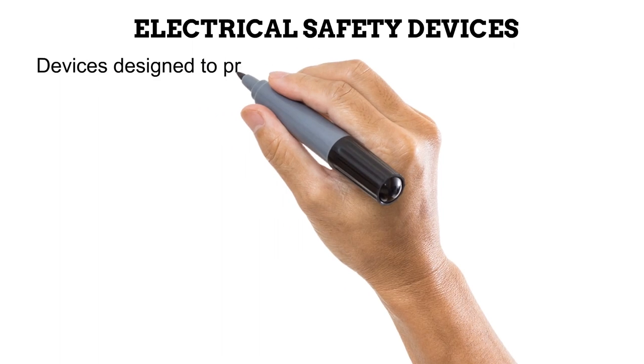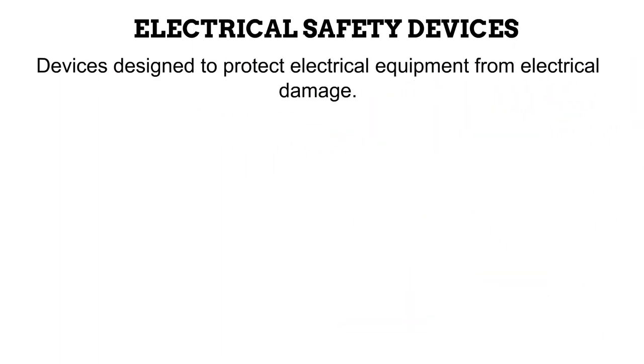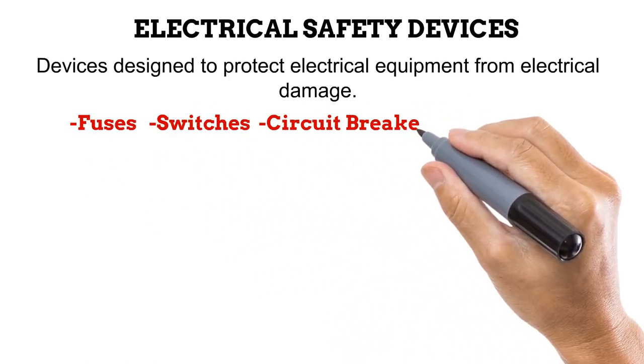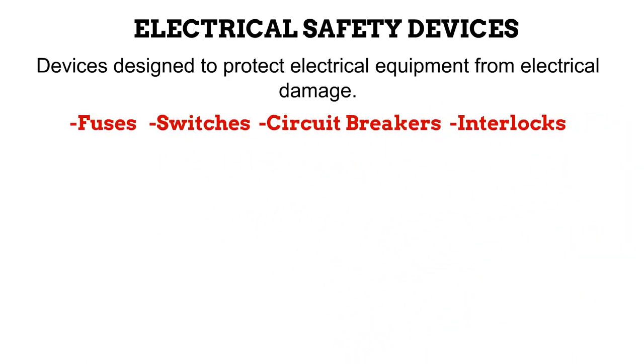Over the last four videos, we have learned about how electricity is generated and passed into the X-ray unit for use. There are times when this electrical supply could be problematic. In cases of electrical overloads and power surges, electricity could damage the equipment it supplies. Devices known as electrical safety devices are in place to reduce this. Common electrical safety devices in radiography include fuses, switches, circuit breakers, and interlocks.